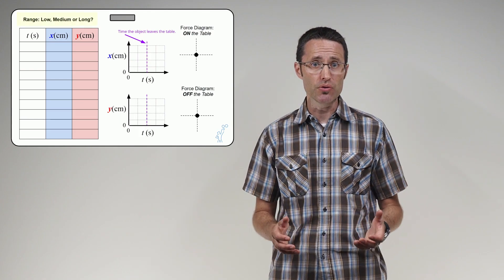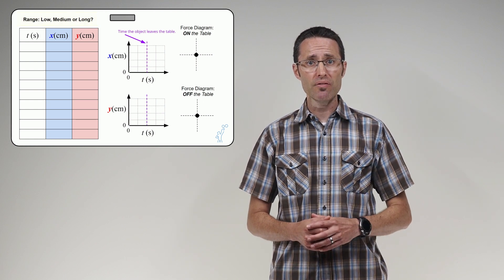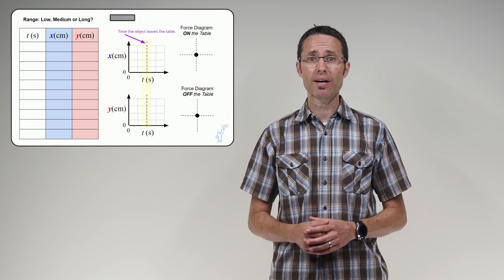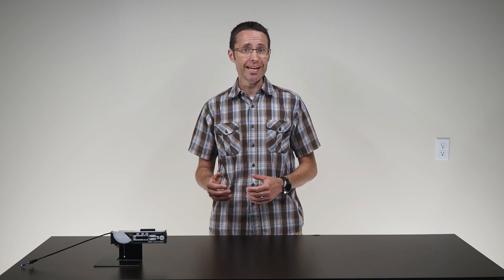Depending on the sequence of topics you cover in class, students may not already have been exposed to forces and force diagrams, so these can be left off. However, a discussion of the forces experienced by the ball can really help students understand why the ball moves in the ways shown by their position versus time graphs. Have the students label which range setting was used to launch the ball in their assigned video, and add a vertical line on their graphs showing the approximate time the ball left the table. Tell students to add estimates of the velocities for each section of the X position versus time graph both on and off the table.